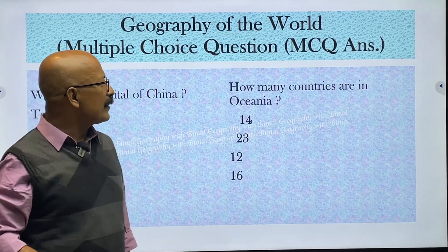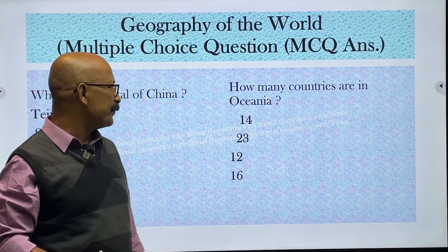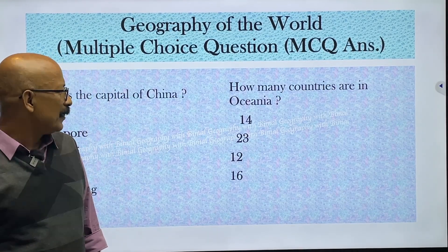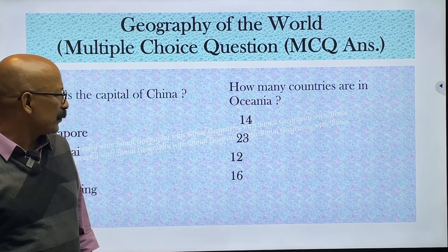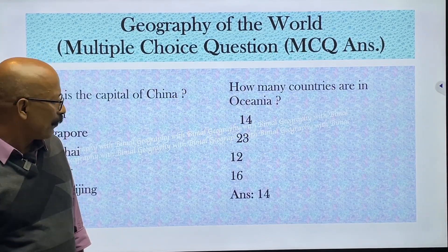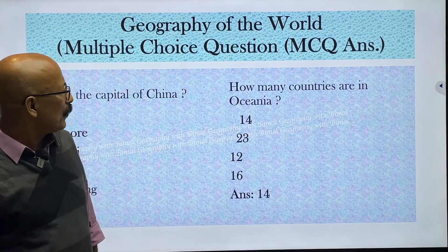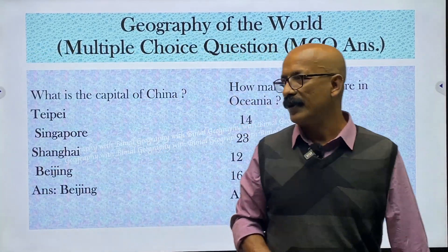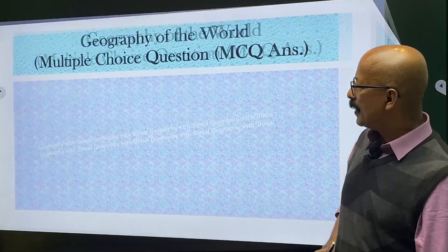How many countries are in Oceania? Options are 14, 23, 12, and 16. The answer is 14 — there are 14 countries in Oceania, which is one more than South America.